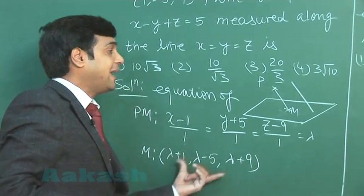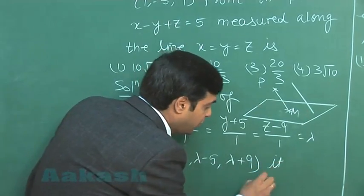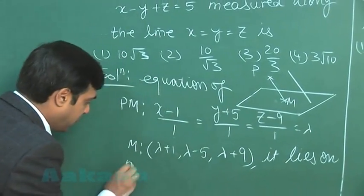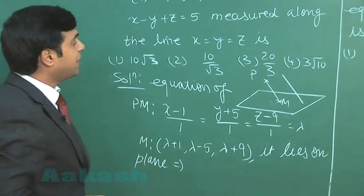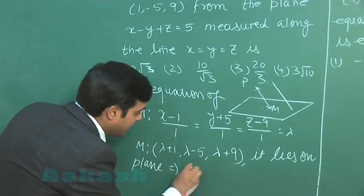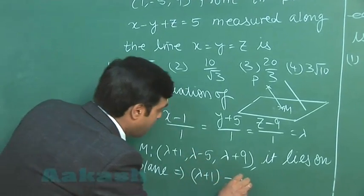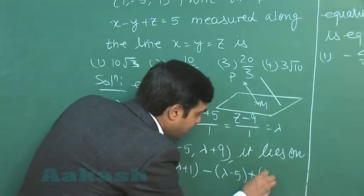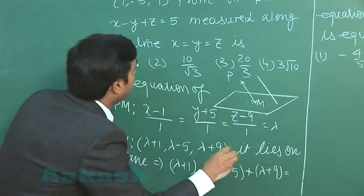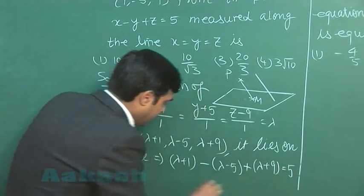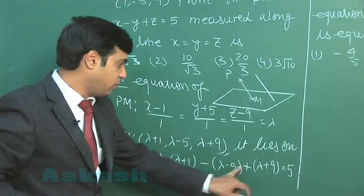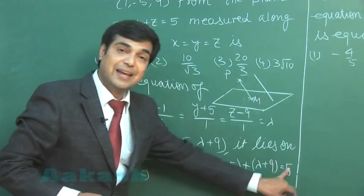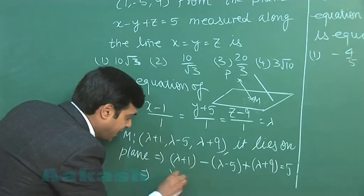This point is lying on the given plane. Substitute this point as it is lying on plane. On substituting it in the equation of plane, we get λ + 1 minus (λ - 5) plus λ + 9 equals 5. λ is cancelled out, 1λ is left, then we have 9 + 5 + 1 equals 5 to get λ as minus 10.